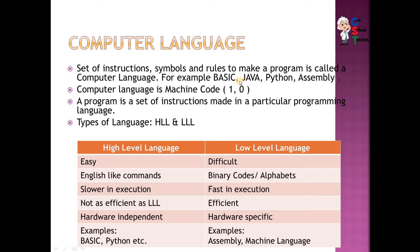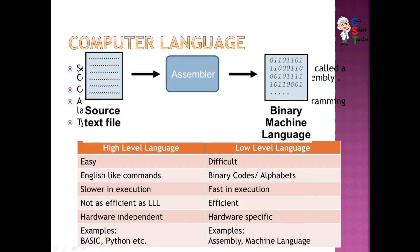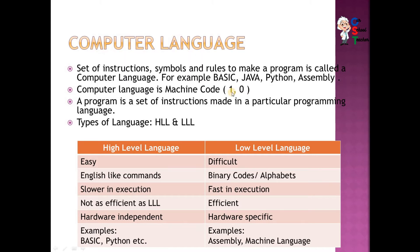Every language — whether BASIC, Java, Python, or any other — must ultimately be translated into machine language. Machine language is the language of 1s and 0s. Every command written in any high-level language must be converted into a code of 1s and 0s that is understood by computer hardware. So the true computer language is machine language. A program is a set of instructions made in a particular programming language using its own instructions, symbols, and rules.